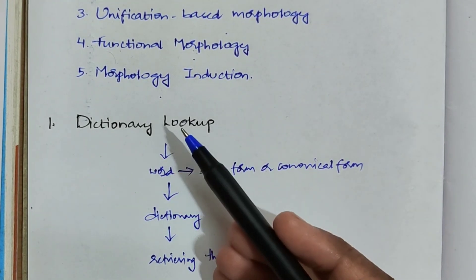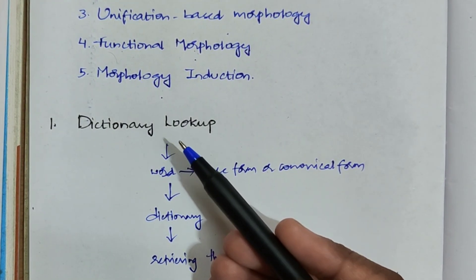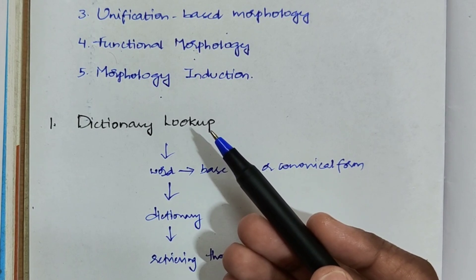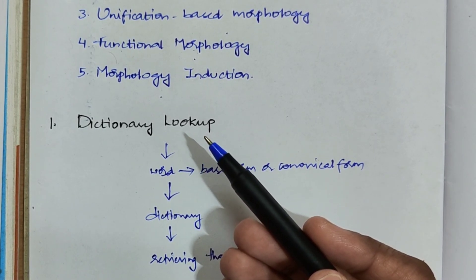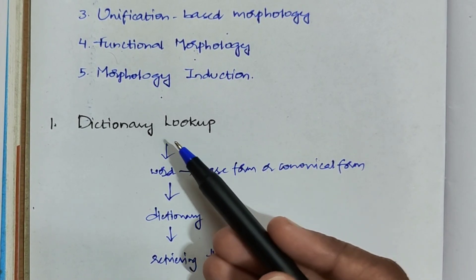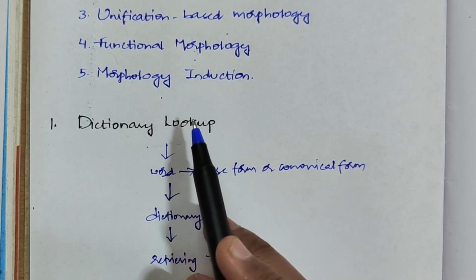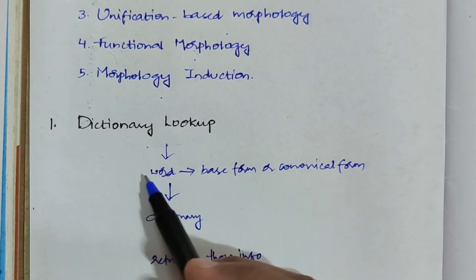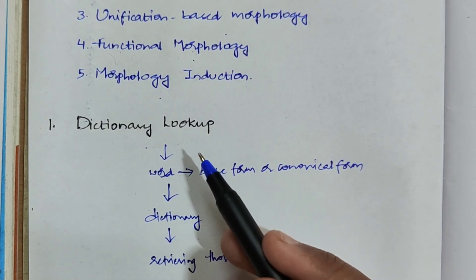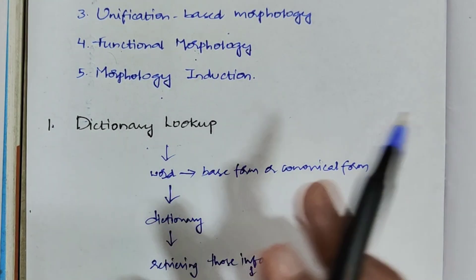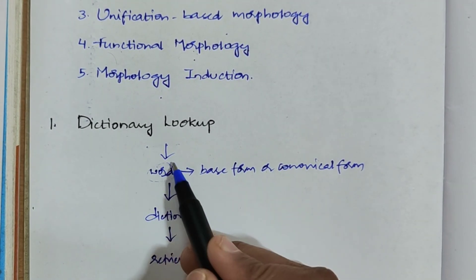So what is dictionary lookup? This is one kind of model which is used to analyze the structure of a particular word. The process to analyze the structure of a word is: suppose you wanted to analyze a particular word, take that word. In order to analyze it, you have to first convert it into a base form or canonical form.